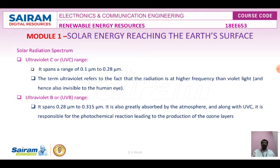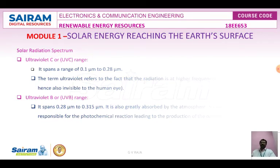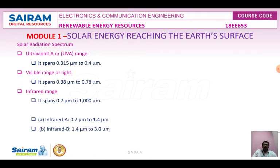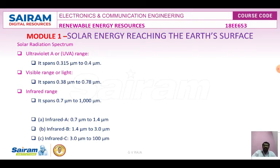The UVA range spans from 0.315 micrometer to 0.4 micrometer. It is less damaging to DNA and is used in tanning and PUVA (photochemical UVA therapy) for psoriasis treatment. The visible range of light spans from 0.38 to 0.78 micrometer, is visible to the naked eye, and is used for communication purposes.